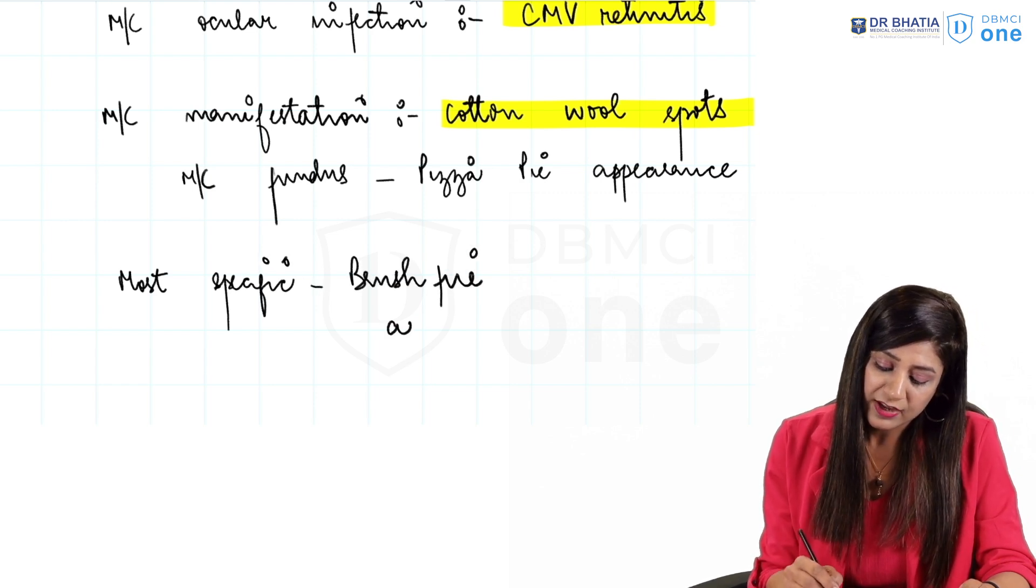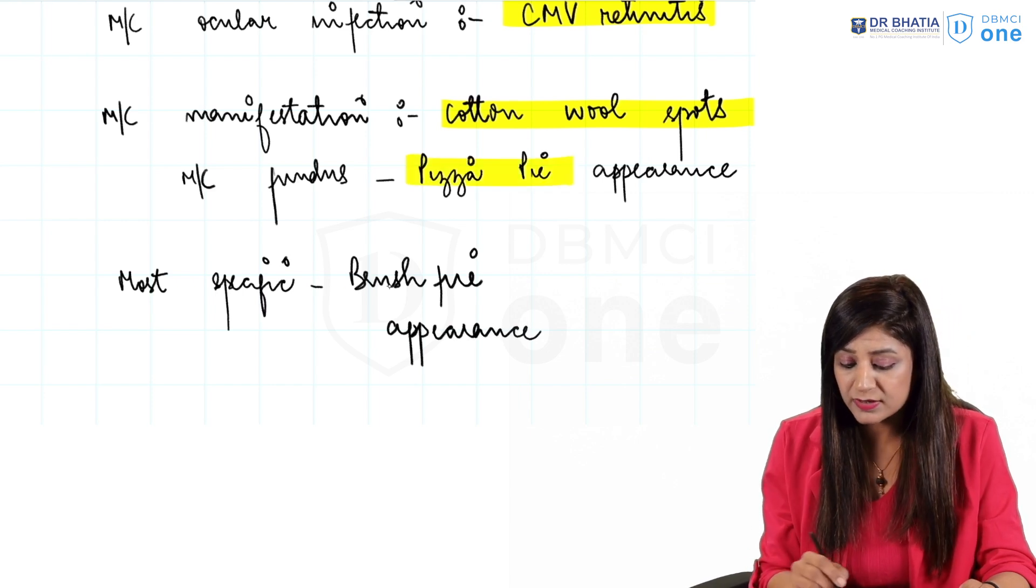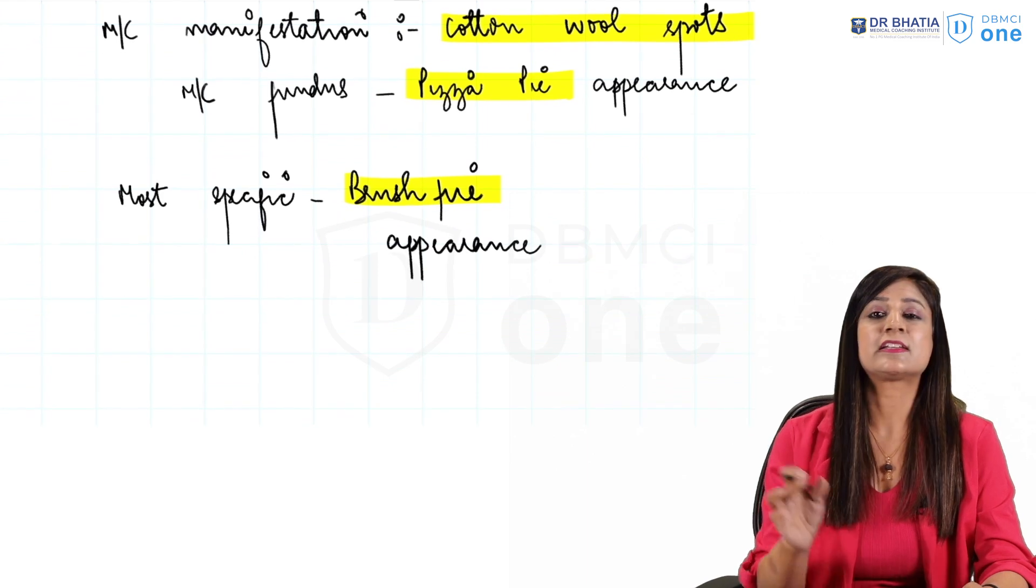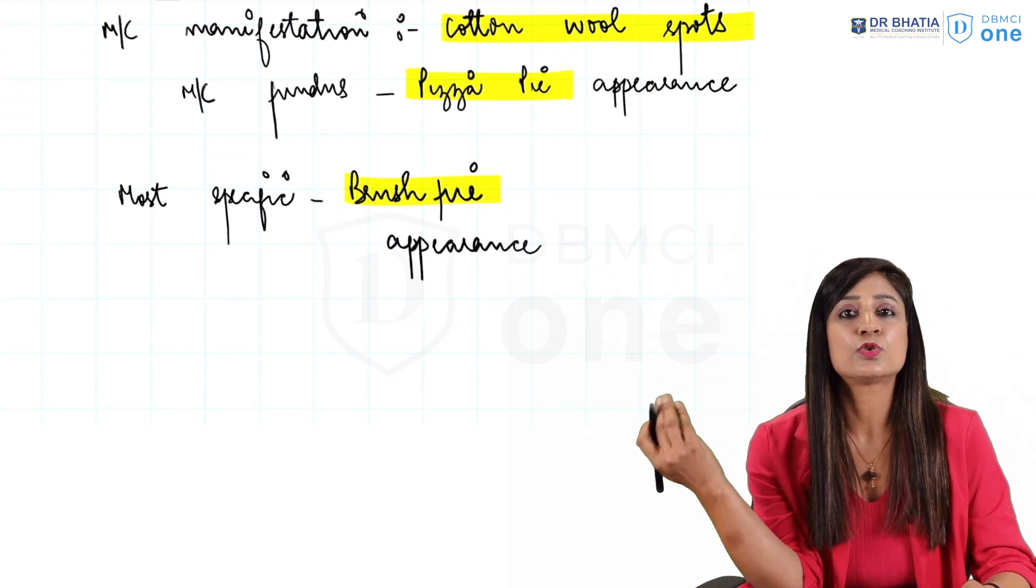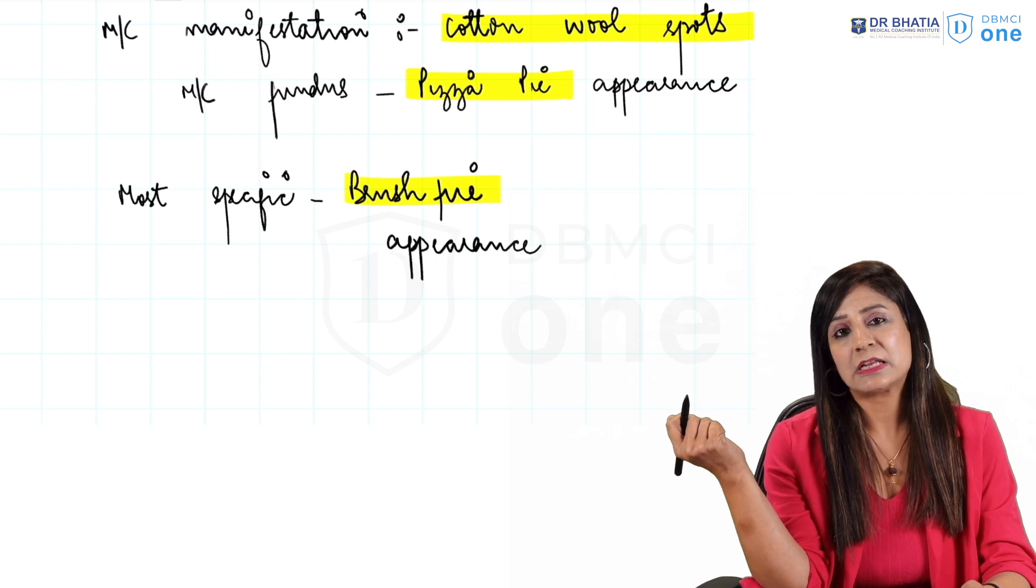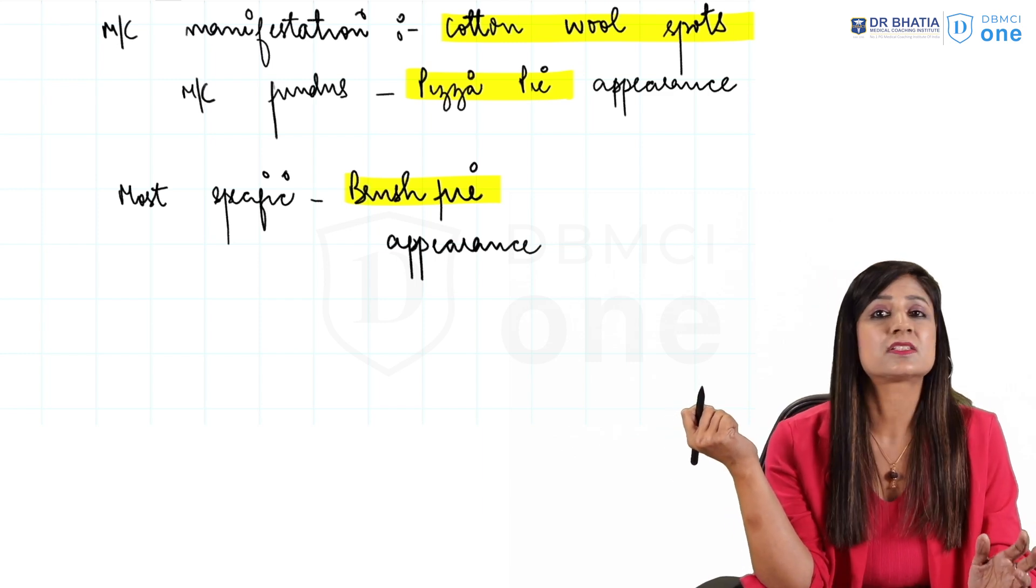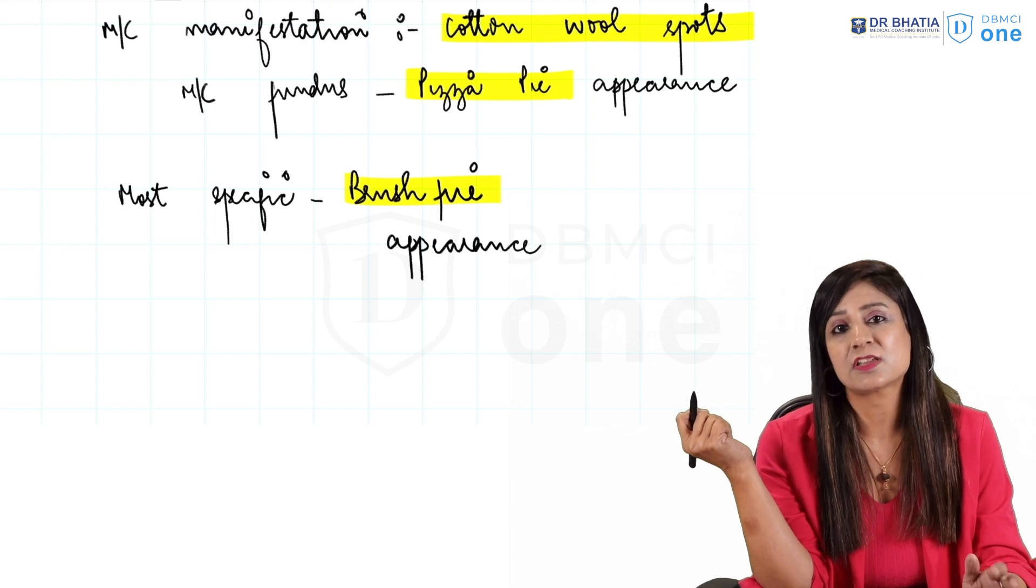Most of the time we are confused between most common and most specific. Similarly in the diabetic cataract, the most common was presenile cataract but the more specific is a true metabolic snowflake cataract. Similarly here, the more common fundus picture is the pizza pie appearance but more specific is the brush fire appearance.